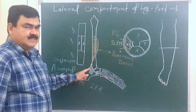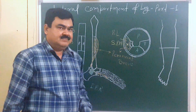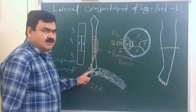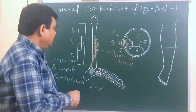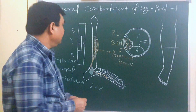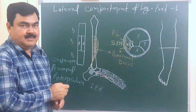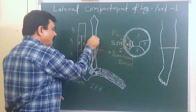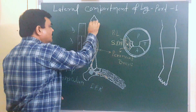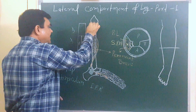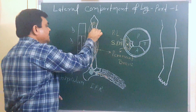The action of peroneus brevis is eversion and plantar flexion — it is a powerful everter of the foot and a weak plantar flexor. Peroneus longus takes origin from the upper one-third, the whole lateral surface, the posterior half of the middle one-third, and some portion from the head of the fibula.